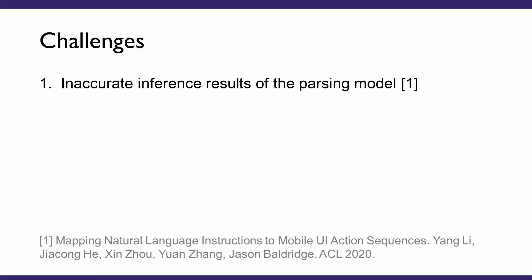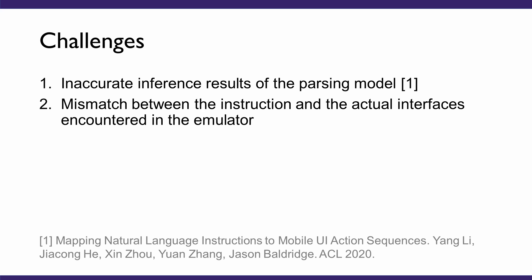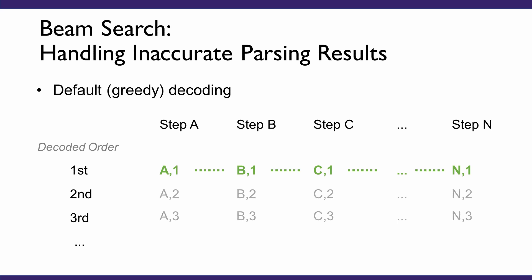Two challenges arise from the automatic execution of instructions crawled from the web. One issue is the inaccurate inference results of the parsing model, which is a pre-trained deep model. The other issue is the mismatch between the instruction and the actual interfaces encountered in the emulator. Both issues can cause failures for automatic execution. To address the first issue, we introduce BeamSearch to decode the parsing model output. By default, the instruction parsing model extracts a best sequence of operation-object tuples for actions from the text instructions by greedy decoding, where the most likely tuple for each action is selected.